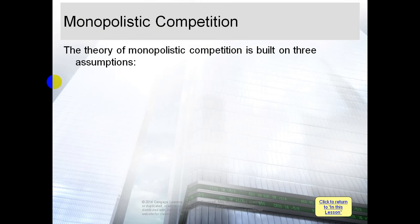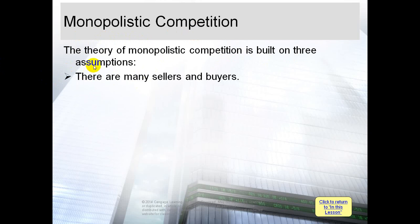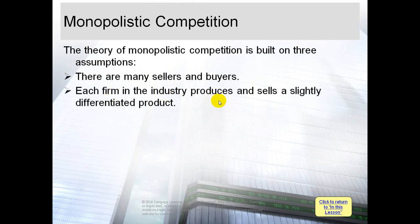The theory of monopolistic competition is built on three assumptions or three characteristics. When a firm is within this market structure, first: there are many sellers and buyers — same as perfect competition. In monopoly, there is only one seller and many buyers. Second: each firm in the industry produces and sells a slightly differentiated product — underline 'differentiated.'